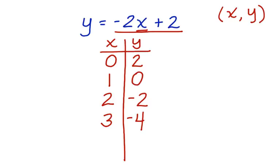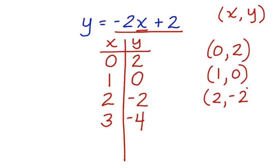Now I have a set of ordered pairs. I have 0, 2, 1, 0, 2, negative 2, and 3, negative 4. It's a negative there.